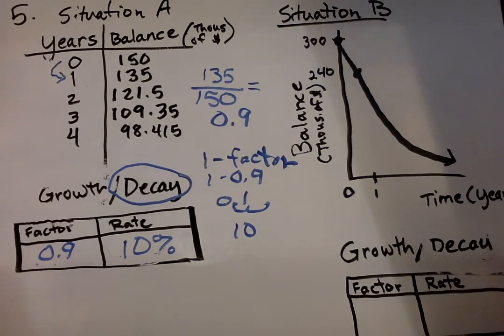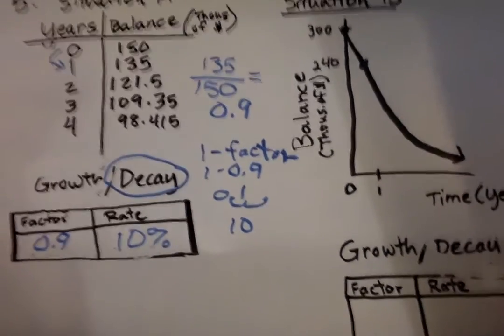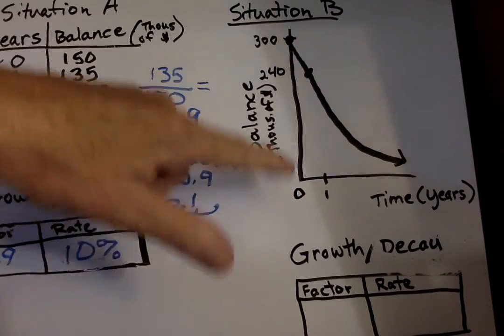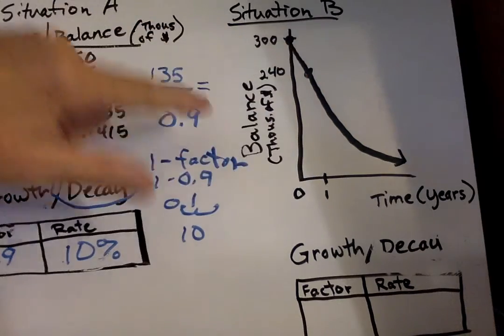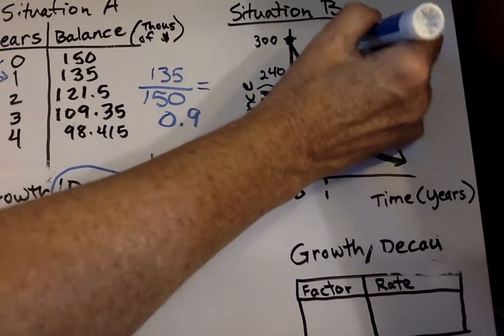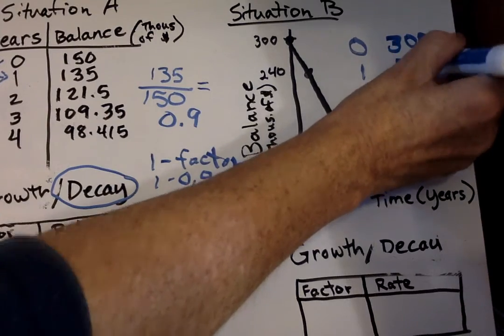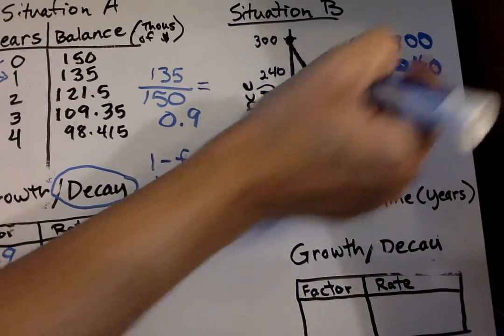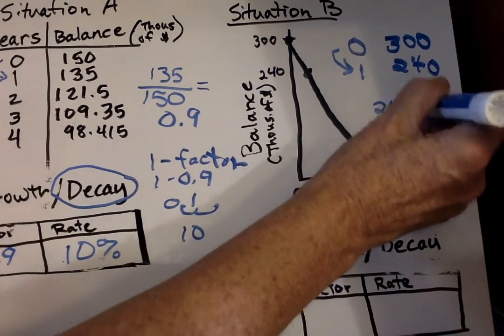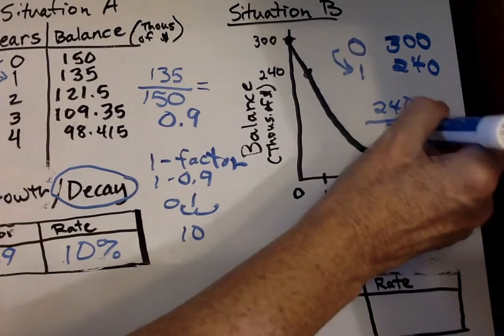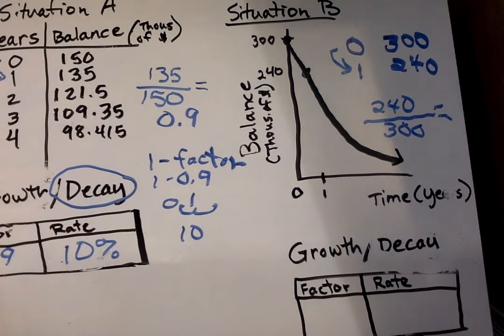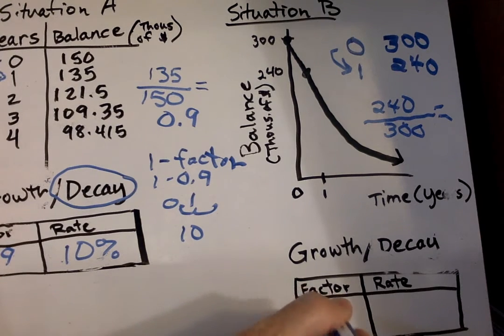Now we look at situation B. Over here we have 0.300 and then 1.240. This is in thousands of dollars. So we can make our table 0.300 and 1.240. And being it's only 1 there, that means we can divide that. So we take our second number, 240, and we divide it by our first number, 300. So if we take 240 divided by 300, your answer is 0.8. So our factor is 0.8.